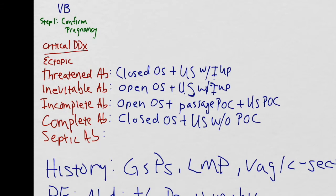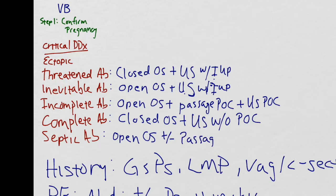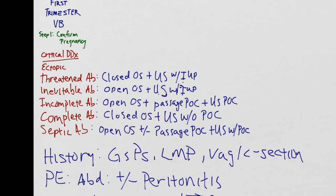In a septic abortion, the OS will be open. There may or may not have been passage of products of conception, and the ultrasound will show retained products of conception. The patient will be septic, so there could be evidence of fever, tachycardia, and hypotension.